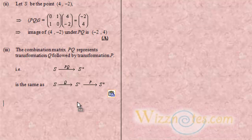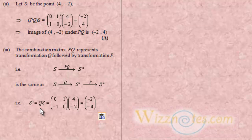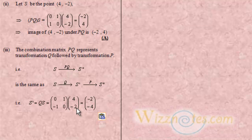I'm going to show what S' would be under Q. S' under Q equals Q times S. Q is [0, 1; -1, 0] multiplied by the matrix for S, which is [4; -2]. The result is: 0×4 + 1×(-2) = -2, and (-1)×4 + 0×(-2) = -4. So S' has vector (-2, -4).